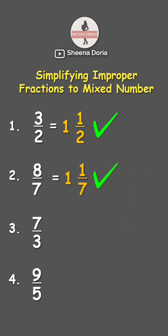For number 3, we have 7 over 3. So that's 7 divided by 3, which is 2. 2 times 3 is 6, then 7 minus 6 is 1. Therefore, our answer is 2 and 1 third.